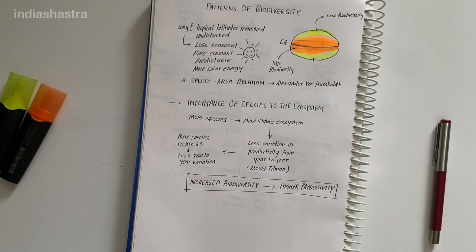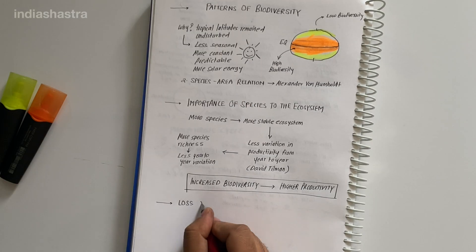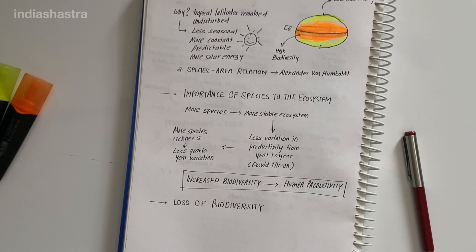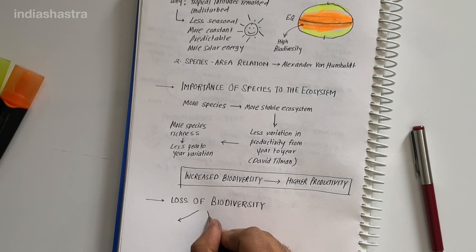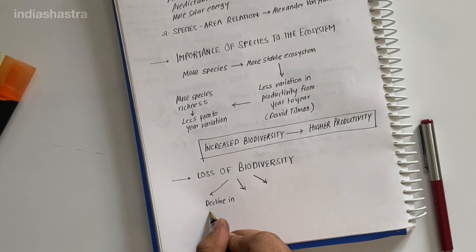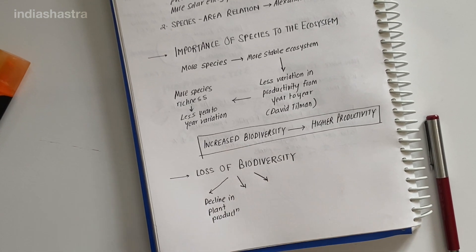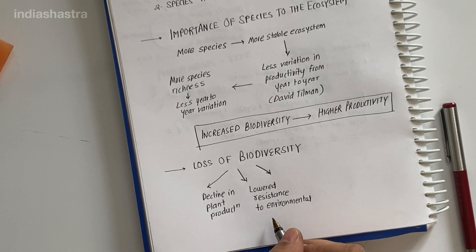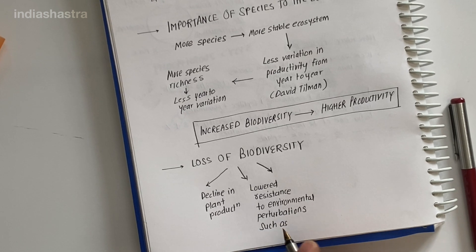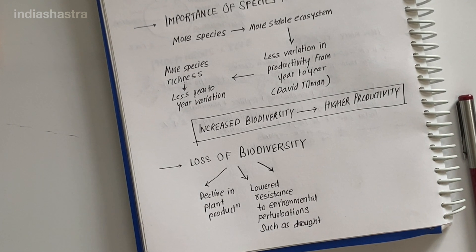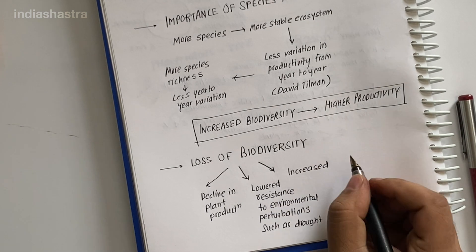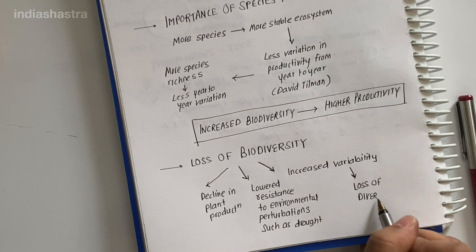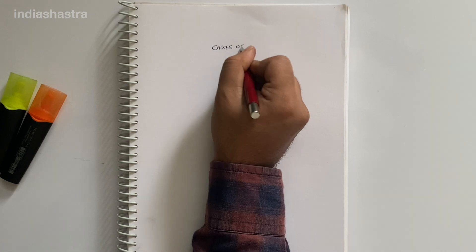Hence, rich biodiversity is not only essential for ecosystem health but also for the survival of the human race on this planet. The biological wealth of our planet has been declining rapidly, and the accusing finger is clearly pointing to human activities. The last 20 years alone have witnessed the disappearance of 27 species, as per NCERT data written in 2007. Loss of biodiversity in a region may lead to decline in plant production, lowered resistance to environmental perturbations such as drought, and increased variability in ecosystem processes such as plant productivity, water use, and pest and disease cycles.